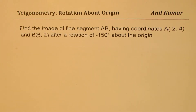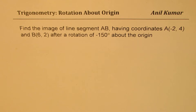The question here is: find the image of line segment AB having coordinates A(-2, 4) and B(6, 2), after a rotation of minus 150 degrees about the origin.